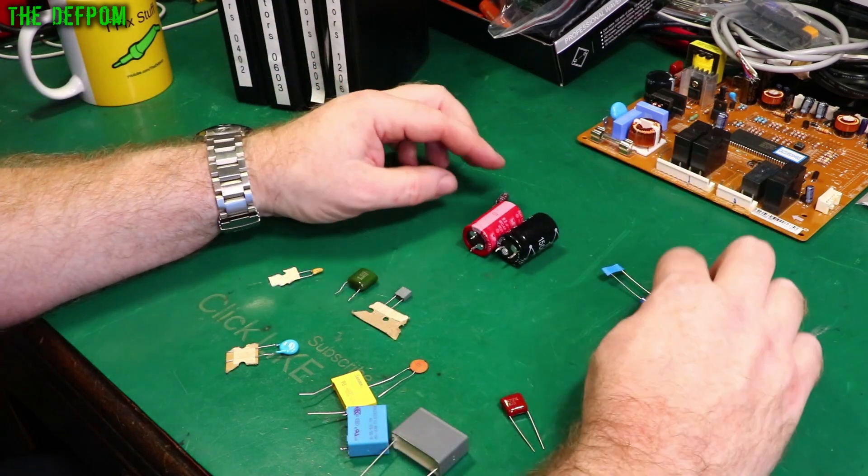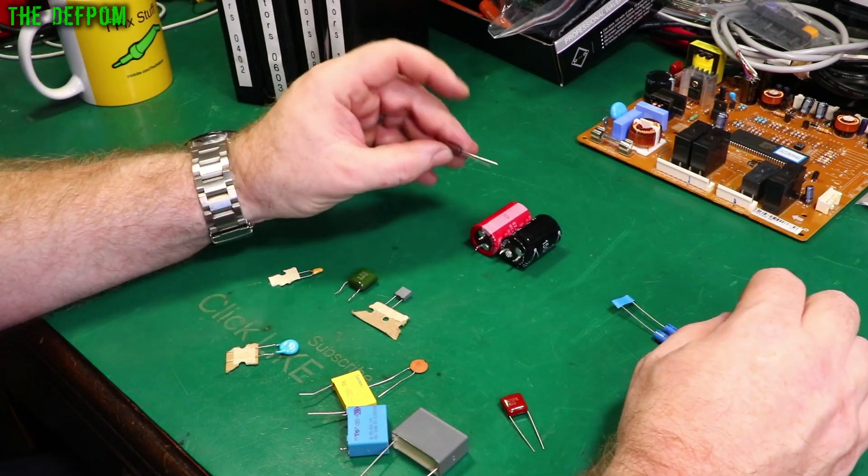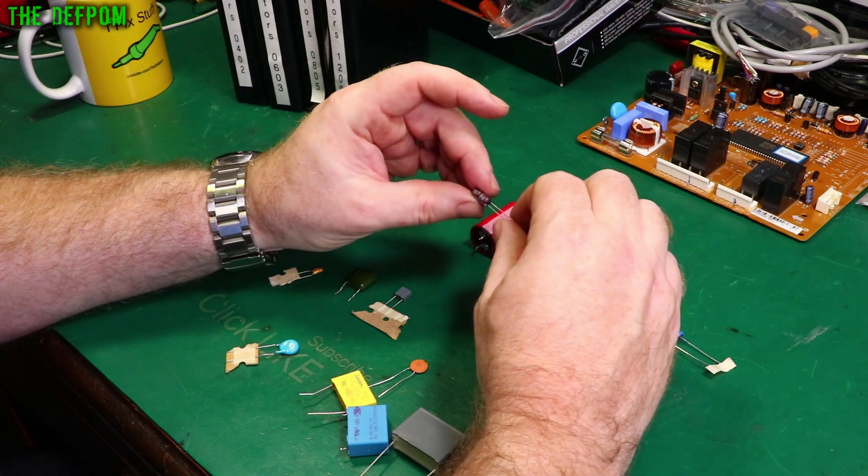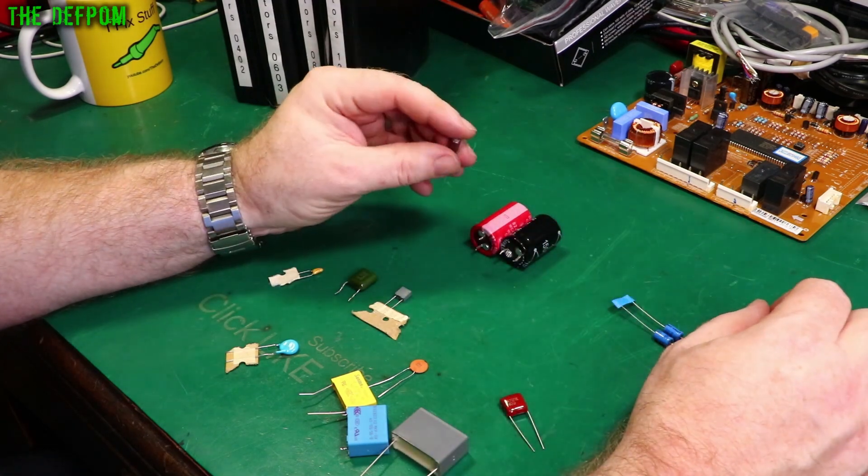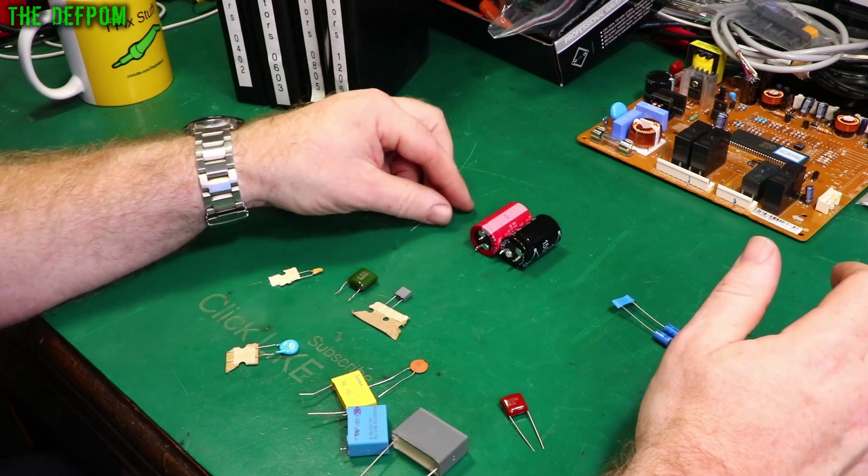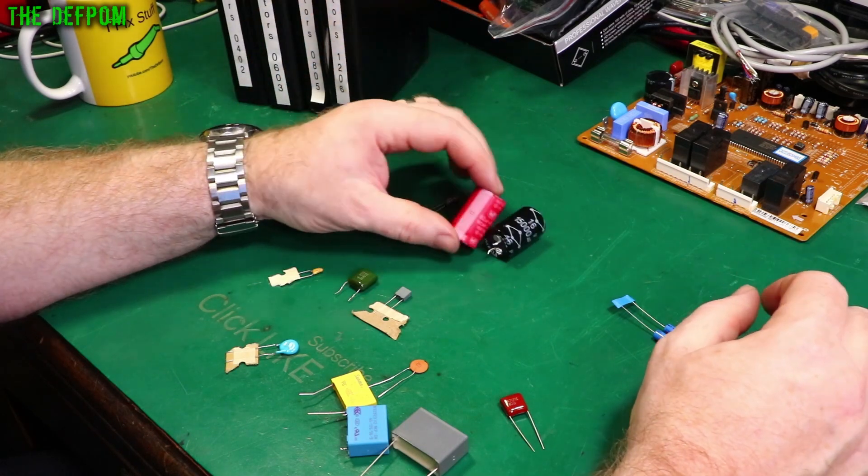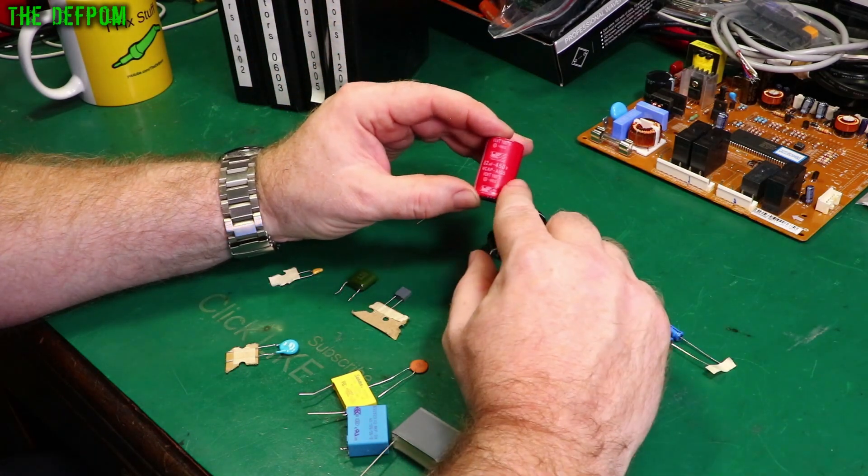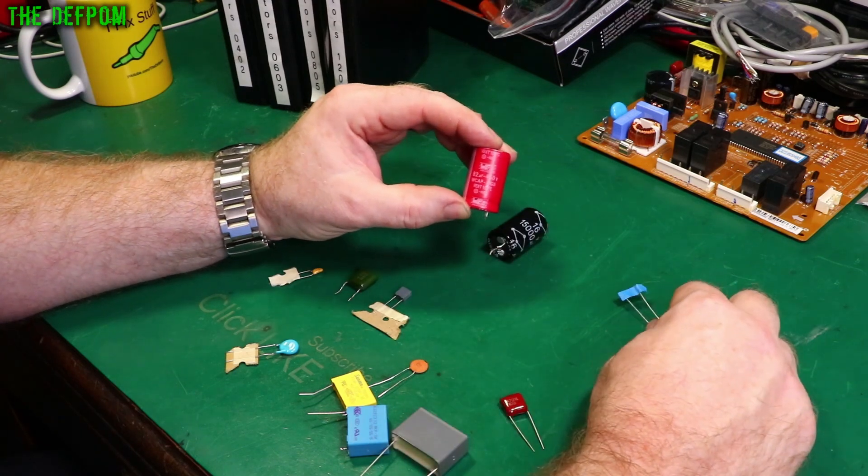Over here we've got some electrolytic capacitors. Different types. So we've got a small one here which is one microfarad, this is rated for 50 volts. These are used in power supply and smoothing at main AC or DC supplies. This is an 82 microfarad, 82 times bigger, but it's 450 volts.